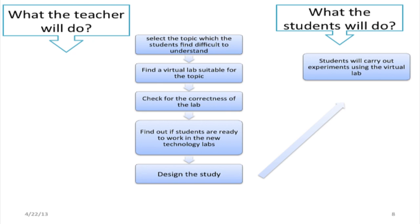What is the teacher supposed to do? The teacher will select the topic which students find difficult to understand, find a virtual lab suitable for the topic, then check for the correctness of the lab. The labs have been developed by domain experts, so we can be assured they are correct — we only need to check that they match our objectives. We also need to find out if the students are ready to use these labs, only then can we be assured the strategy will work.